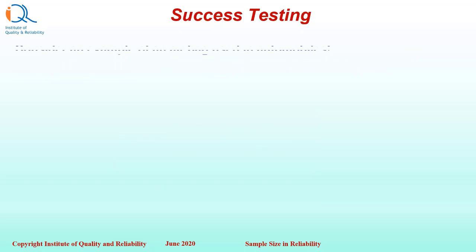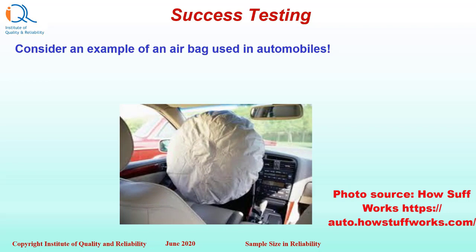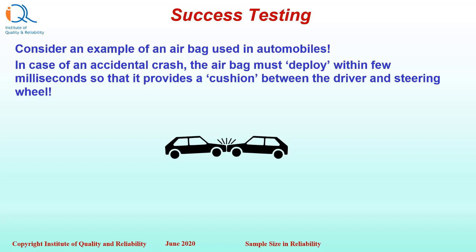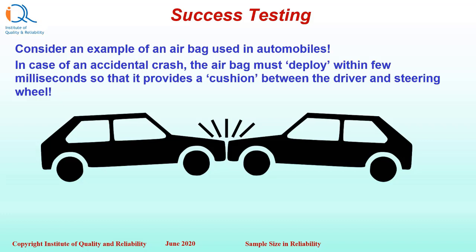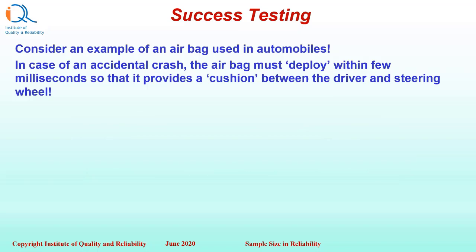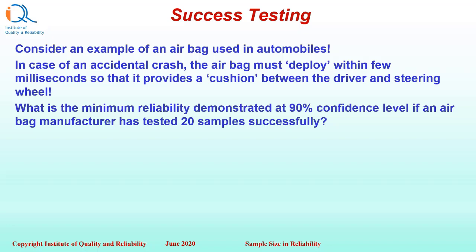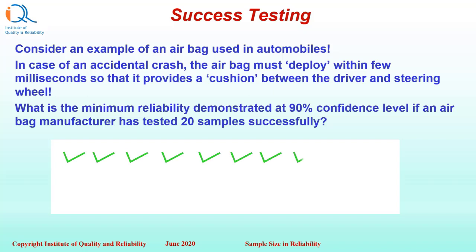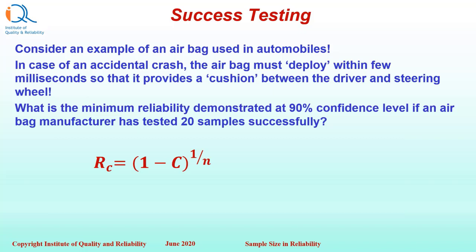Consider an example of an airbag used in automobiles. In case of an accidental crash, the airbag must deploy or inflate within a few milliseconds so that it provides a cushion between the driver and the steering wheel. What is the minimum reliability demonstrated at 90% confidence level if an airbag manufacturer has tested 20 samples successfully — meaning all 20 samples have successfully completed the functional test of deployment?